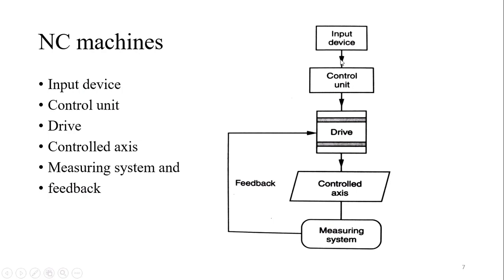First, it gets the input data from the input device. That input data is assessed through the control unit — it verifies and checks it. Then, according to the program, it gives instructions to the drive system. The drive system performs accordingly. This drive system has different motors and actuators which control the axes — X, Y, and Z — in which your tool or workpiece is moving. Those are the controlled axes. The drive controls the axes and then performs the actual work on the machine tool. There is also a measuring system, which is a feedback device. This feedback device checks whether the program you inserted is working correctly and gives feedback back to the drive system.